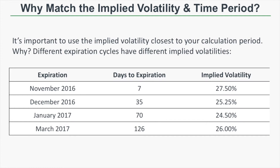Before we get to the examples, let's talk about why you have to match the implied volatility to the time period you're calculating the expected move for. As we can see here in this table, different expiration cycles trade with different levels of implied volatility. So let's say you were going to calculate a 70-day expected move — you wouldn't want to use the 7-day IV of 27.5% because that would give you an expected move that's overstated compared to the 24.5% implied volatility. When calculating an expected move, just be conscious of the differences in implied volatilities between expiration cycles, and make sure you use the implied volatility of the expiration cycle nearest to the expected move period you're calculating.